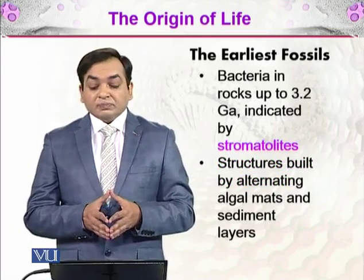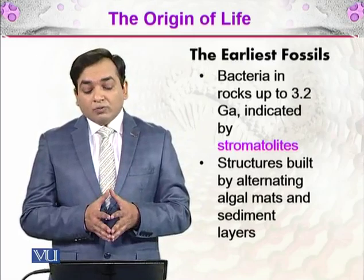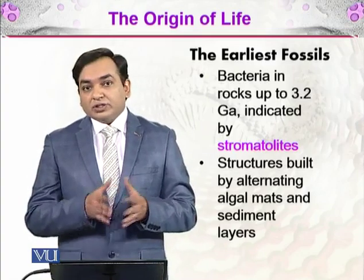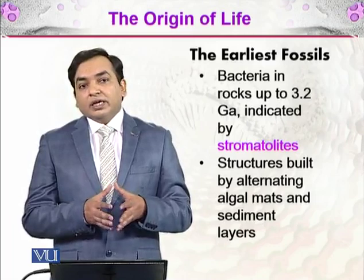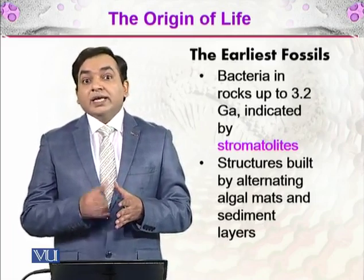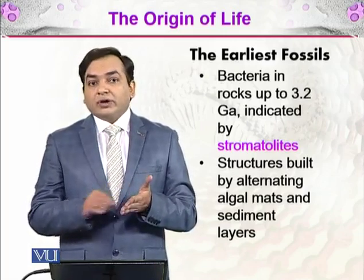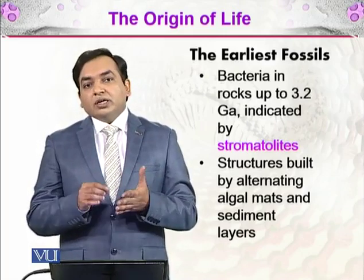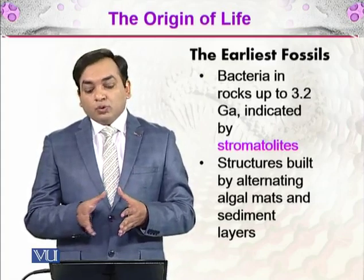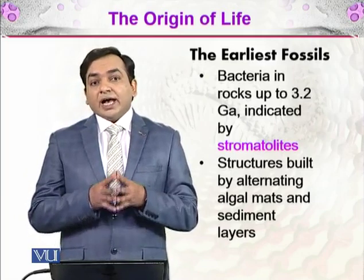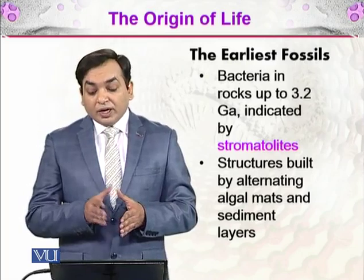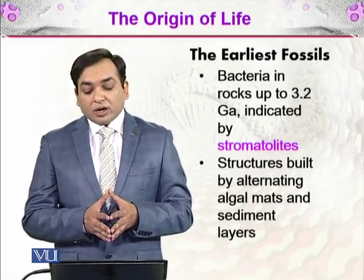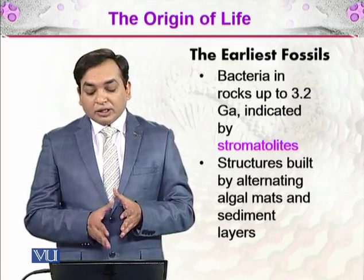We will be discussing that as well. The earliest fossils we have found are bacteria in rocks up to 3.2 giga annum (GA). GA stands for giga annum — 'giga' means 10 to the power of 9, that is one billion, and 'annum' means a solar year. So 3.2 GA means 3.2 billion years. These bacteria are indicated by structures called stromatolites, which are built by alternating algal mats and sediment layers.